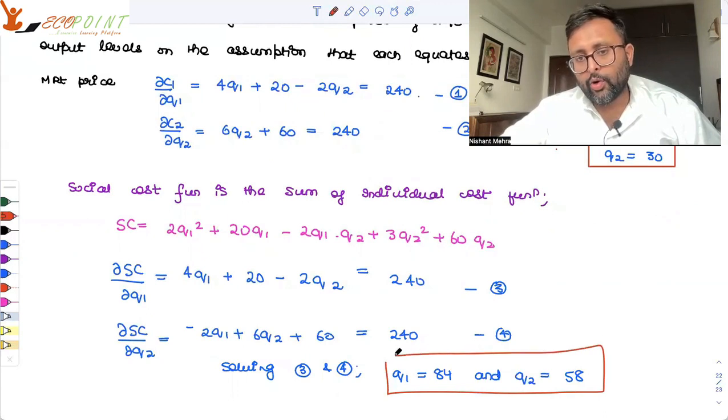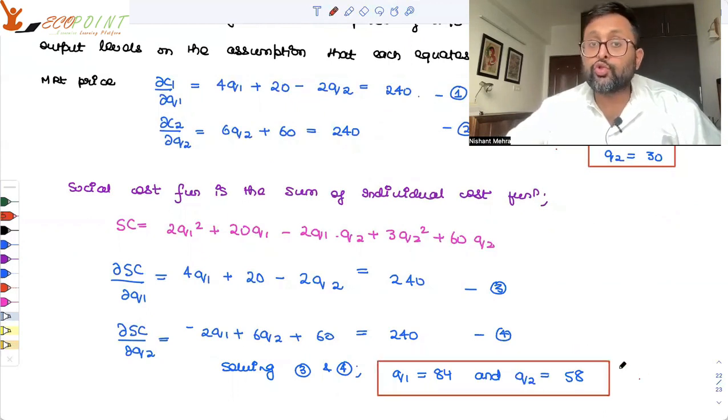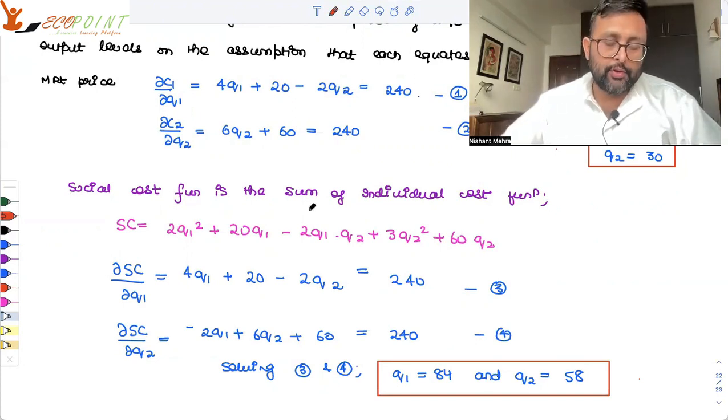So this is telling you what? This is telling you these are the social output levels. So the main thing was that social cost function is the sum of the individual cost function.